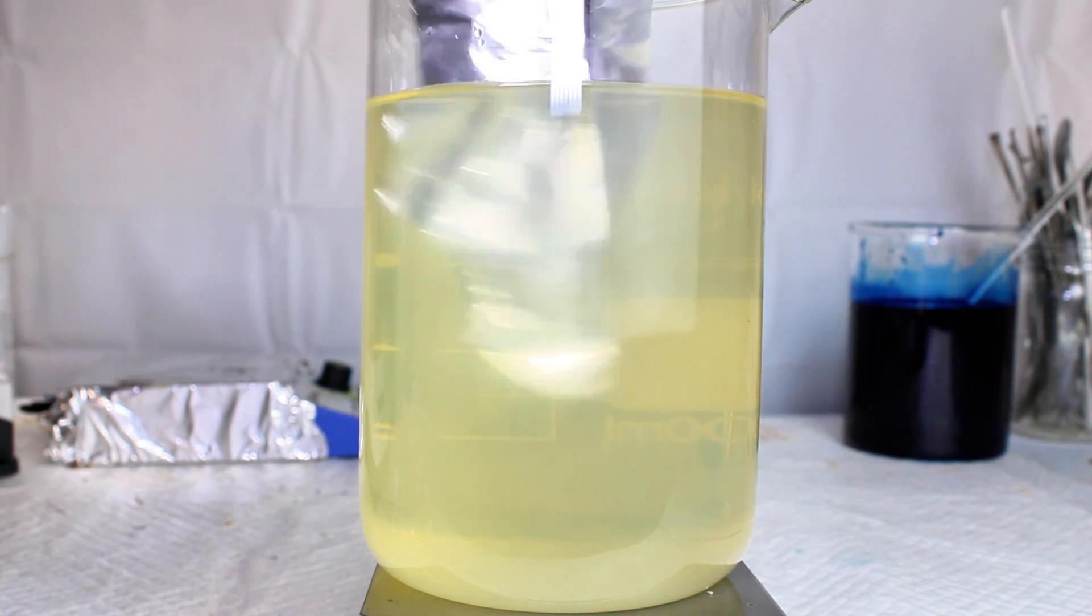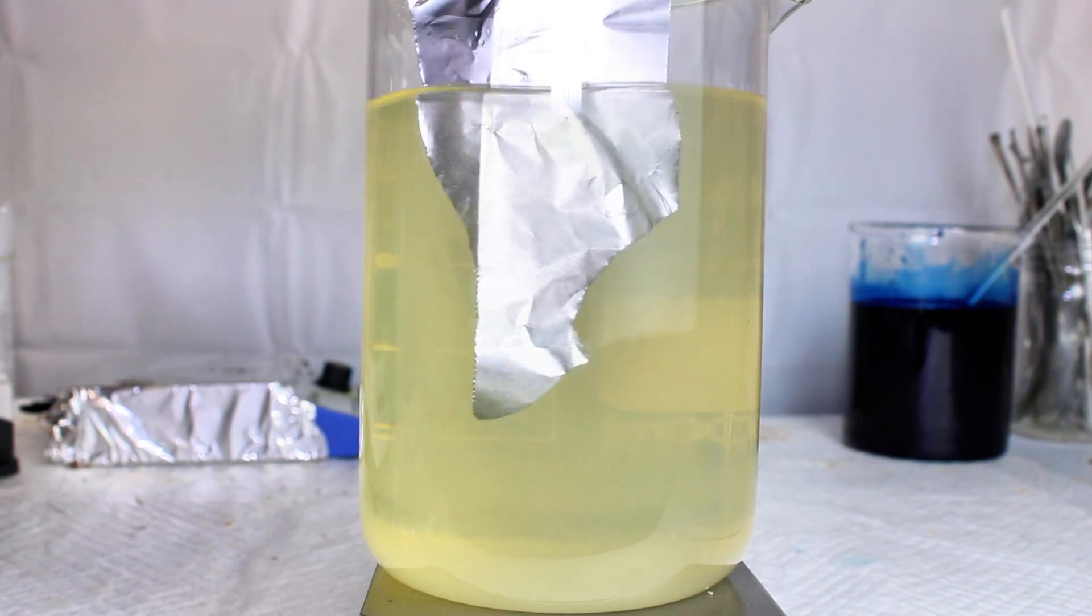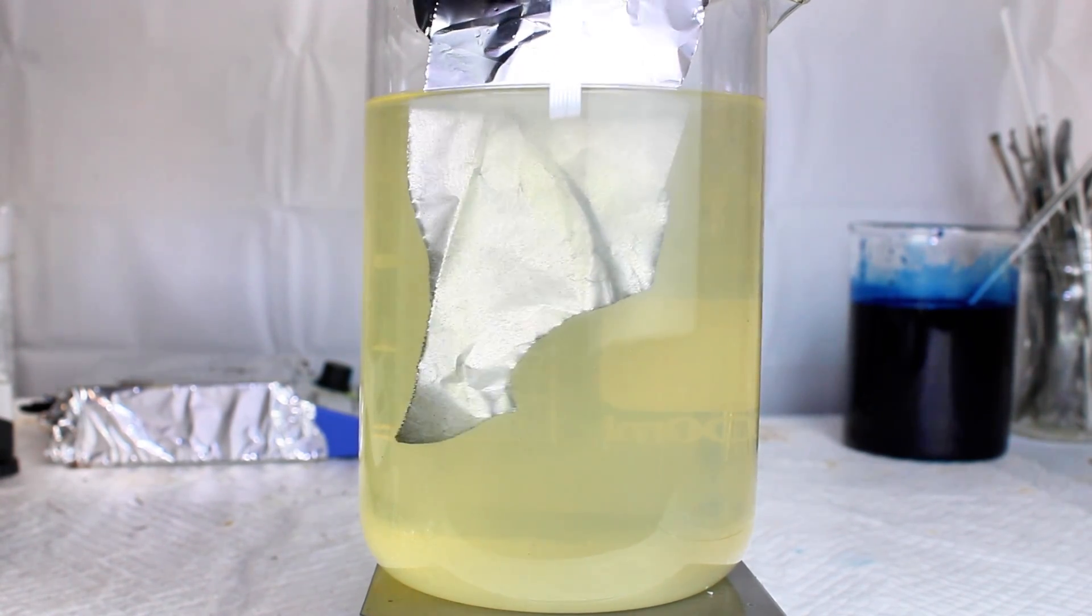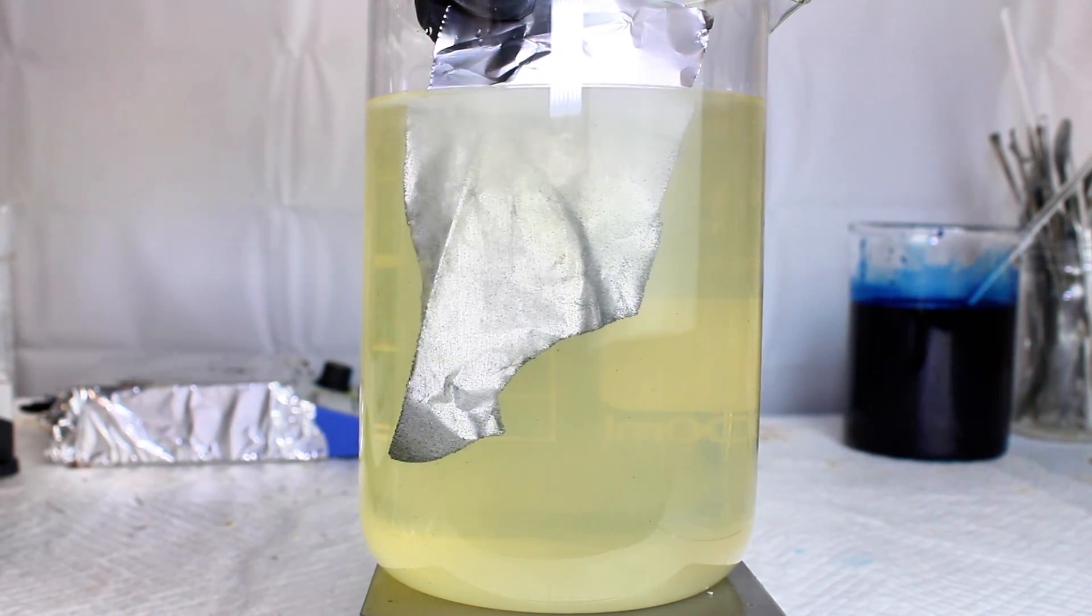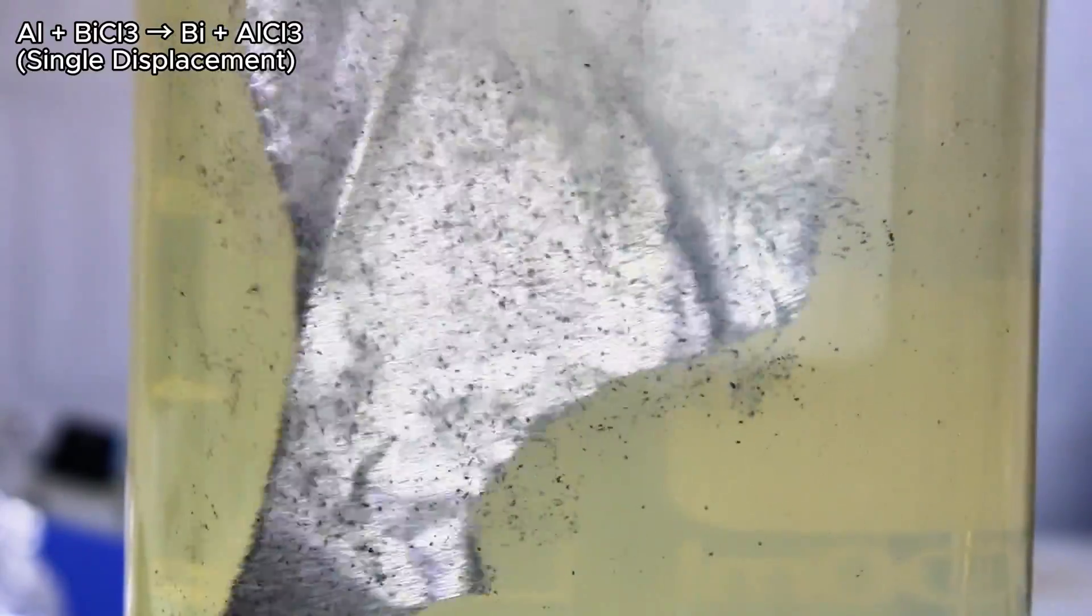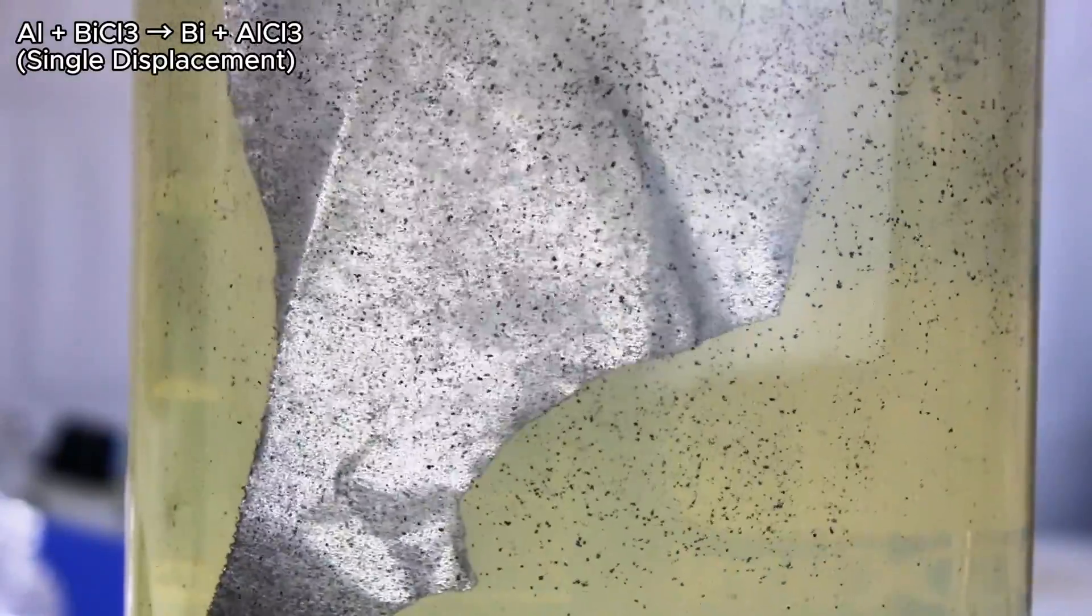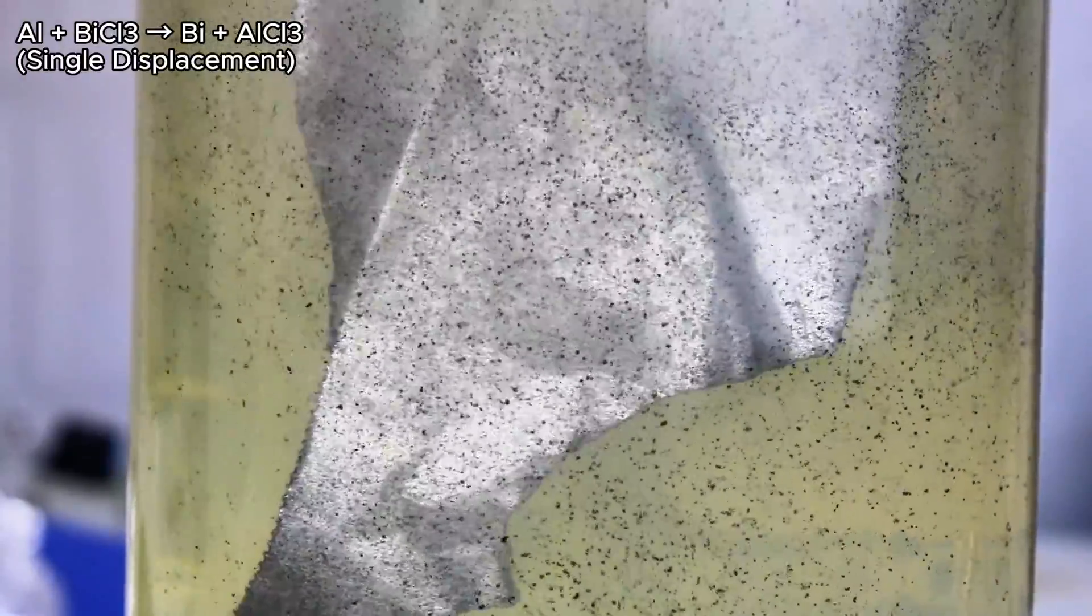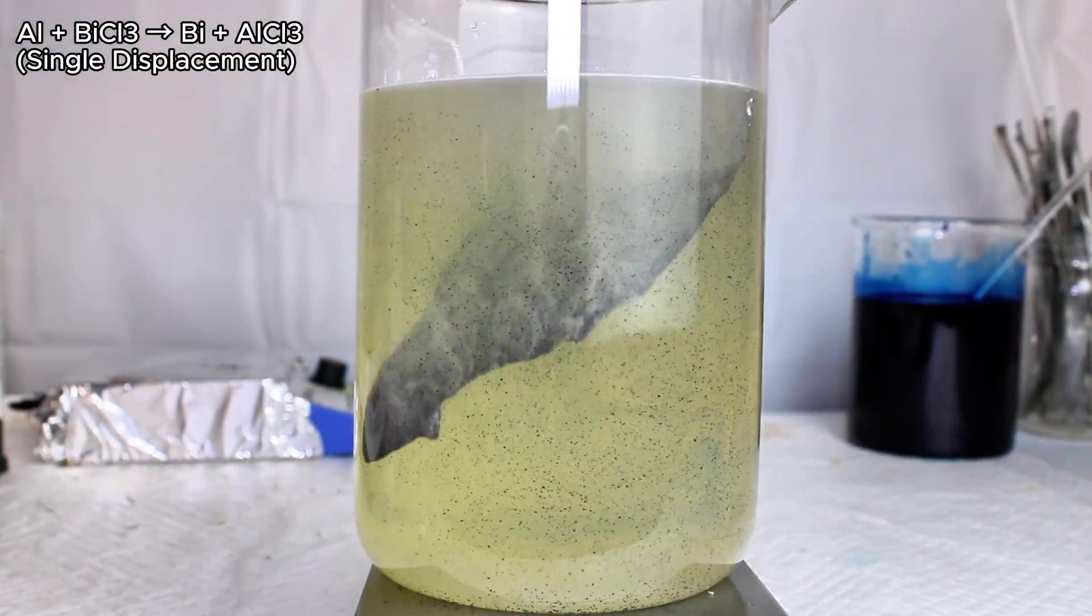Converting bismuth ions to bismuth metal from this point is fairly easy. I diluted it with distilled water to prevent the reaction from getting out of hand, then tossed in some aluminum foil. Aluminum is a strongly reducing metal compared to bismuth, meaning it's very electropositive and has a much greater affinity for electronegative chlorine ions than bismuth does. The chloride ions will leave bismuth and bind to the aluminum, which displaces three electrons from the aluminum. These electrons will immediately replace the three electron deficit of the ionic bismuth and produce elemental bismuth metal, which appears as little black specks that settle to the bottom of the beaker.